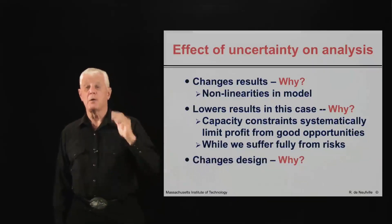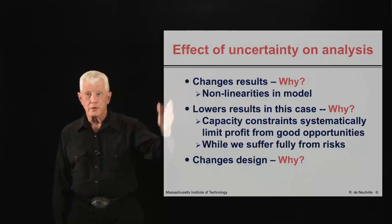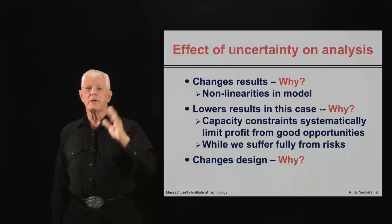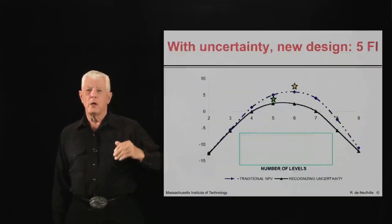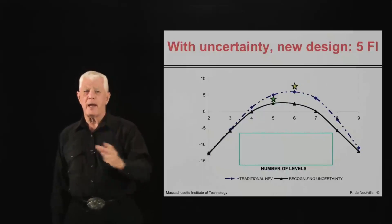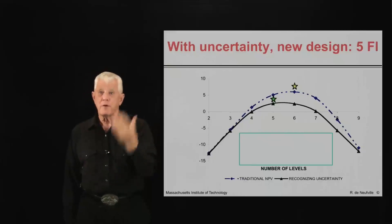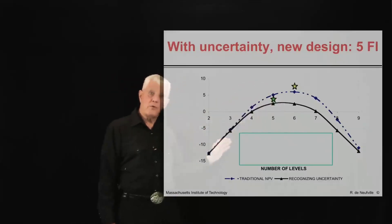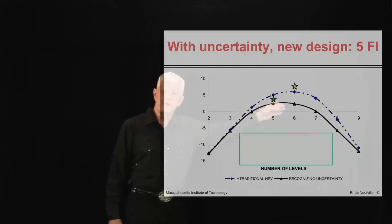So this changes the design. Why? Because if you have that risk and it lowers the value, it hurts you more when you've built larger. So it systematically pushes the design — the appropriate design for the actual conditions with uncertainty — toward a smaller amount. To see how this happens, let's look at this graph, which shows the results from the deterministic case going up quite high and giving a design of about six stories specifically, and what happens with the same case under variability. Systematically, you get a lower value overall for all floors. In this particular case, the sweet spot is not six stories but five stories.